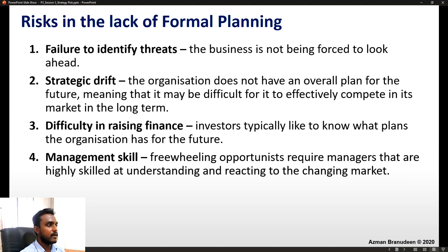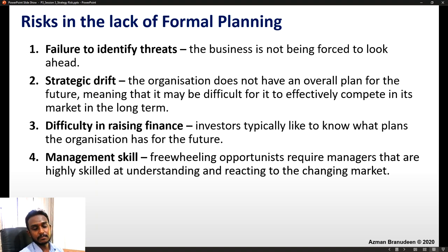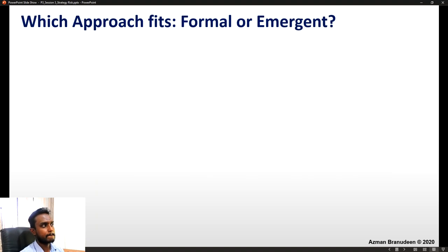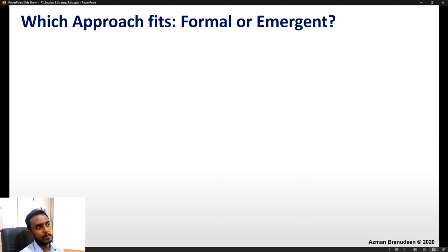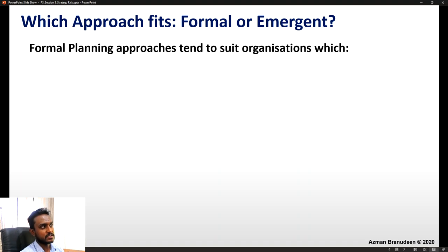Fourth risk in the lack of formal planning — management skill: prevailing opportunists require managers that are highly skilled at understanding and reacting to the changing market. The fifth consideration is which approach fits — formal or emergent? It is a matter of suitability.